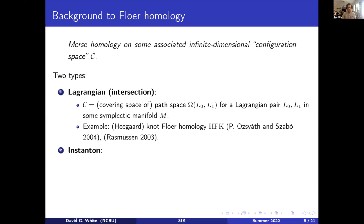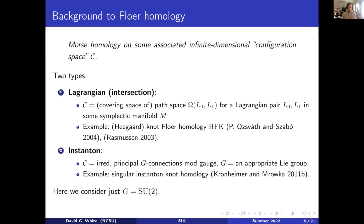And then there's the other type: instanton homology. That is of course the type that singular instanton knot homology belongs to. Here, the space that we look at is the space of irreducible principal G connections modulo gauge equivalence, where G is some appropriate choice of Lie group. For the purposes of this talk, we're going to take this Lie group G to be SU2. This is the most frequently used and the easiest space in which to work.